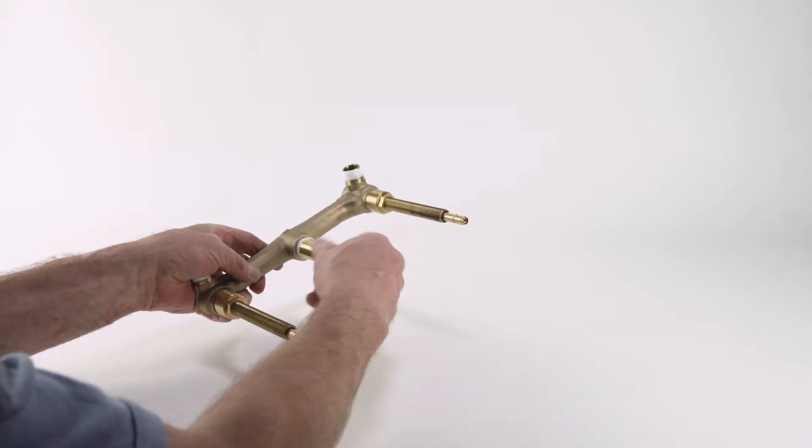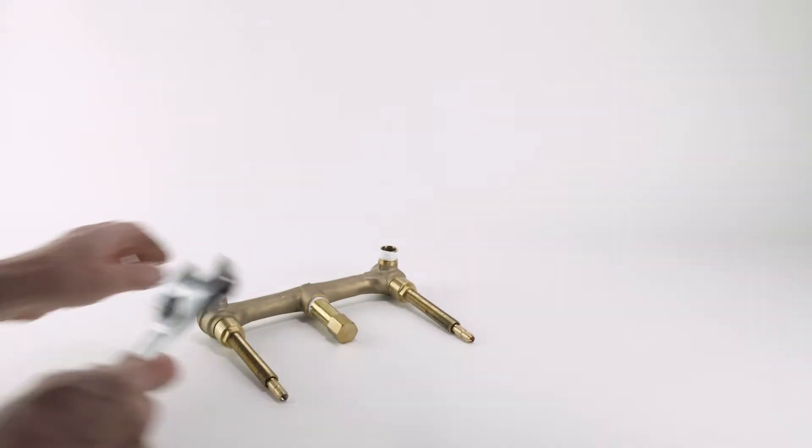Screw the outlet nipple with cap into the body outlet, then tighten firmly with the wrench.